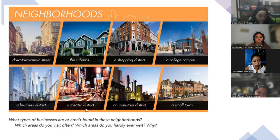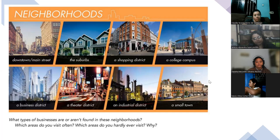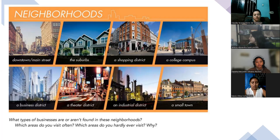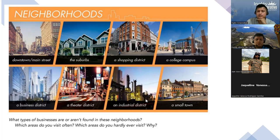Then we have a theater district. What is this? Hollywood Street! Oh yeah, exactly — Hollywood. Like in the US you can see a theater district. Very good. An industrial district — what is this about? Maybe there are a lot of factories? Yeah, exactly right — a lot of factories and industrial things. Very good.